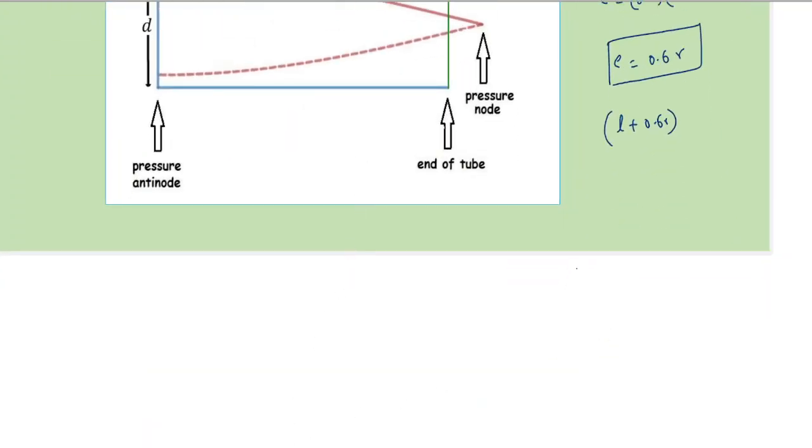the fundamental frequency f1 equals v by 4l. This was neglecting end correction. With end correction, what we get is it becomes 4 times the length: l plus 0.6 into r. So in every case what we learned earlier,